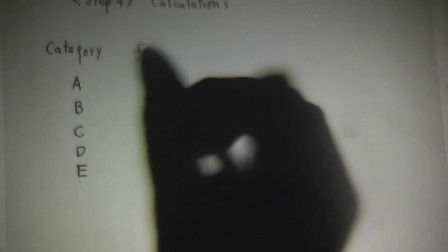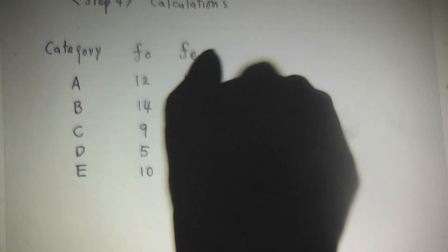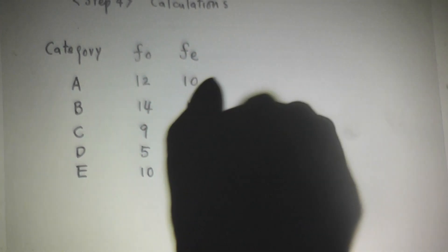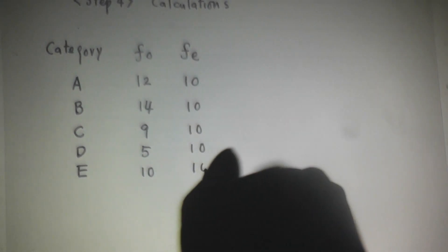And FO, the observed frequency. For A, 12 correct answers. B, 14. C, 9. D, 5. E, 10. And under H0, we obtain the expected frequency distribution. A, 10. B, 10. C, 10. D, 10. E is also 10.